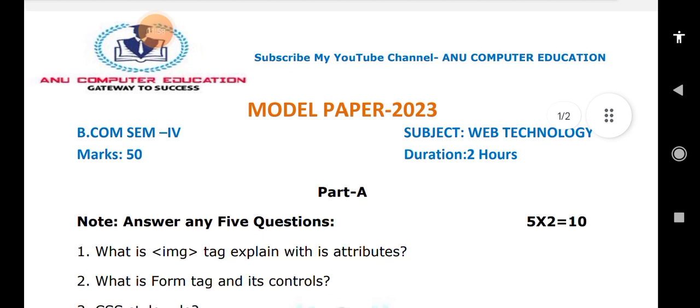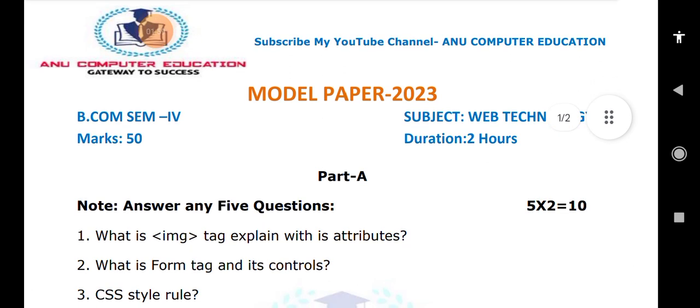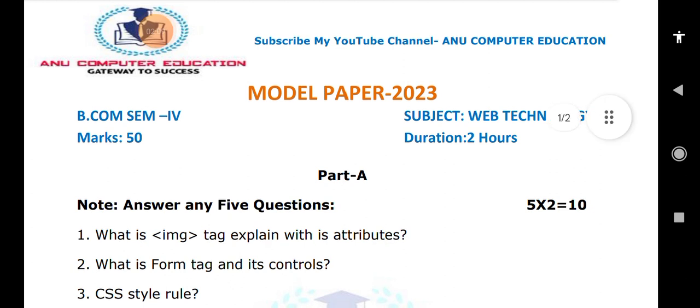Just write the different types of form controls — that is more than enough, no need to explain anything further because this is a broad question. Next is the CSS style rule. You have to write about the selector, property, and value. This is the style rule you need to explain.